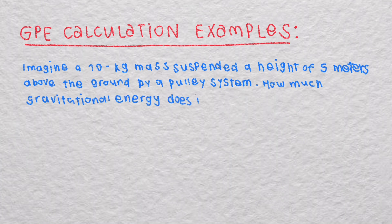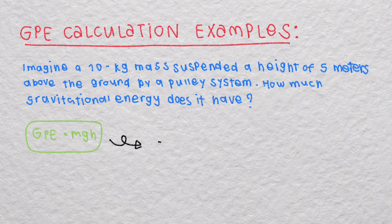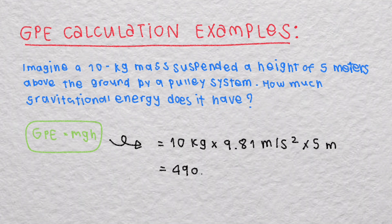So using the equation GPE equals mgh and substituting the known values gives 10 kg multiply 9.81 meters per second squared and multiply 5 m. So it's equal to 490.5 joules. And that's the answer.